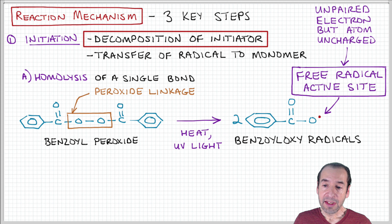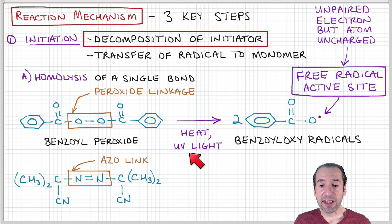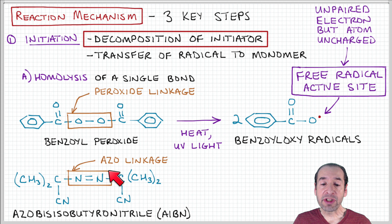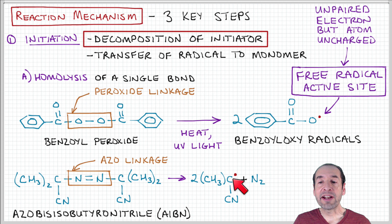Another example of a chemical group cleavage process that can be used to form a free radical site is an azo linkage. There's a double bond between two nitrogen atoms. So for example, azo-bis-isobutyronitrile, or AIBN, is a typical initiator, another example of a typical initiator that forms, again, a chemical group that has this radical active site.